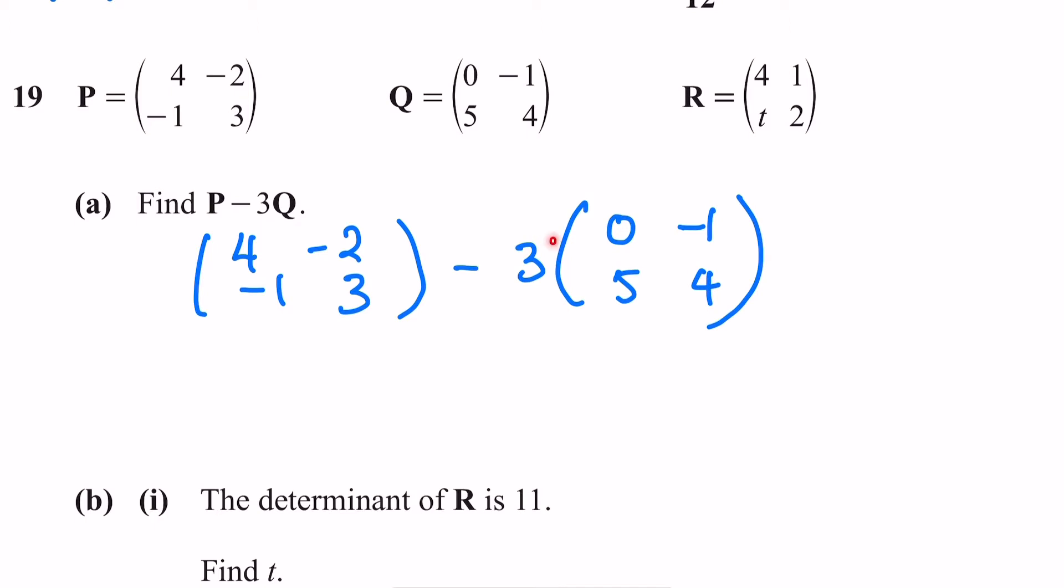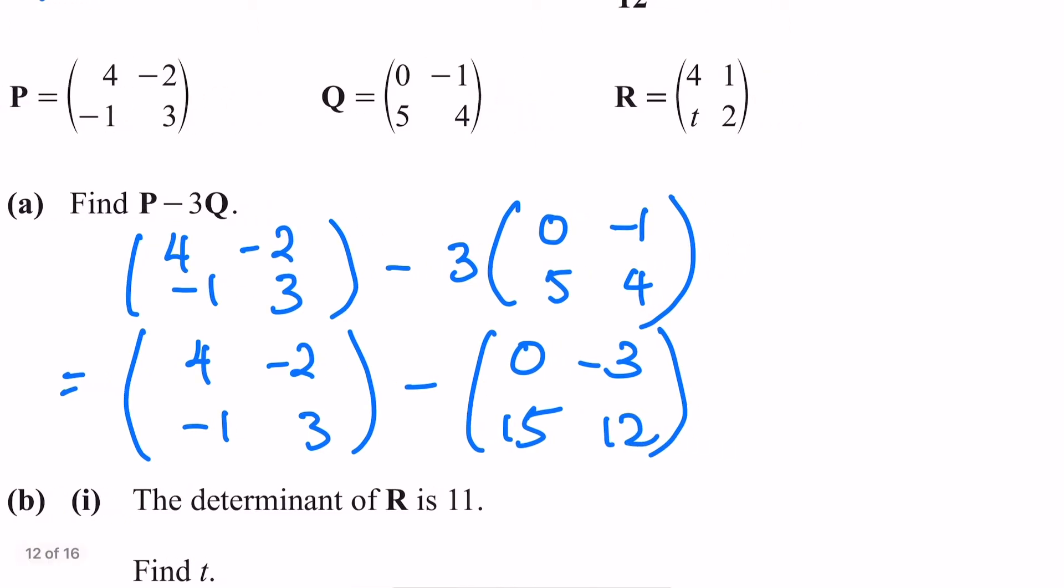I'm going to expand and multiply 3 to every number inside the matrix here. Matrix of P I just carry it down, leaving the negative outside. 3 times 0 will give you 0, 3 times -1 will give you -3, 3 times 5 will give you 15, and 3 times 4 will give you 12.